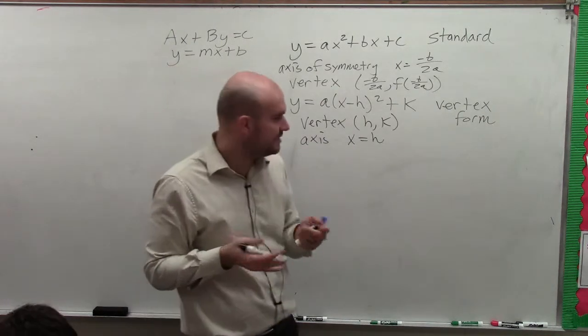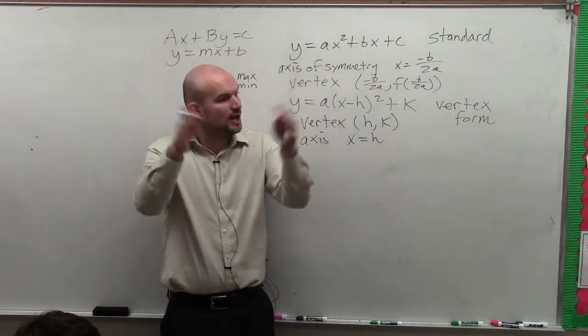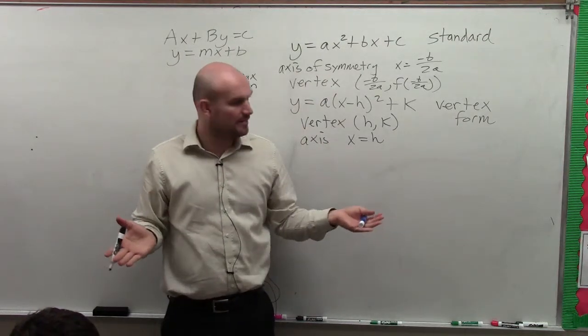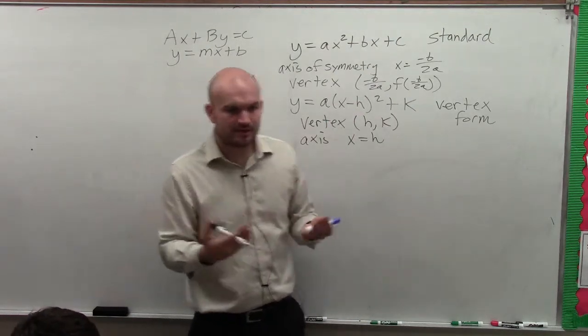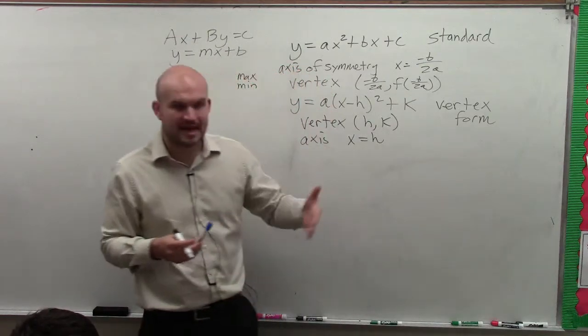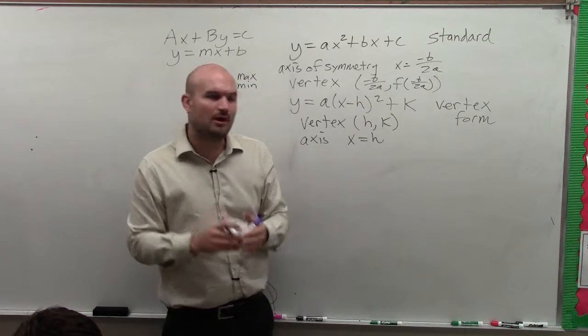Now, there's a couple other things that are important about vertex form. Remember how we determined if a graph opened up or if a graph opened down? Sometimes the graph opened up, sometimes the graph opened down. But the only way that you guys could determine that was basically using your table values and seeing from the vertex, did the points go down or the points go up?